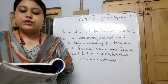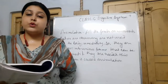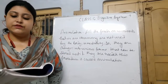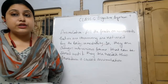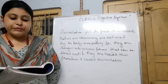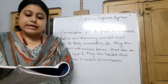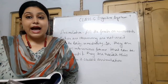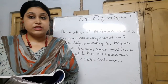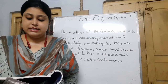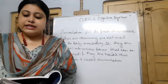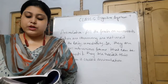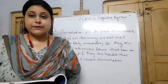Glucose is converted into glycogen and stored in the liver. When required by the body, the liver converts glycogen back to glucose. Excess glucose can also be converted into fat and stored in the adipose tissue. The fatty acids either provide energy or are stored under the skin as fat.